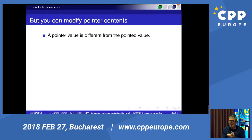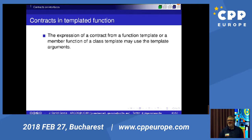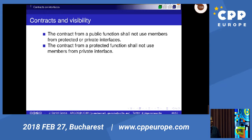In the case of pointers, the content of the pointer is not the value of the pointer, so even if you modify an object through the pointer, you can still include your pointer in your postcondition. For templates, the expression of a contract from a function template or a member function of a class template may use template arguments — for example, size as a template argument can be used in the contract expression.